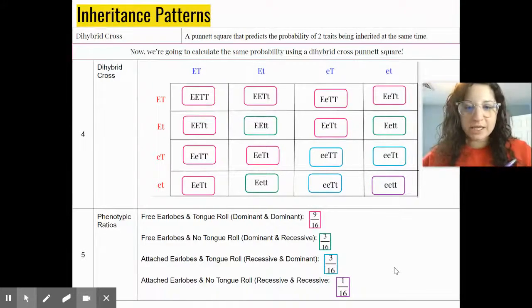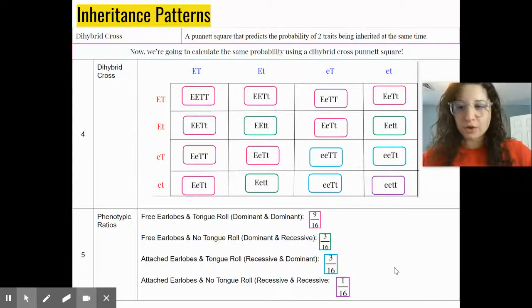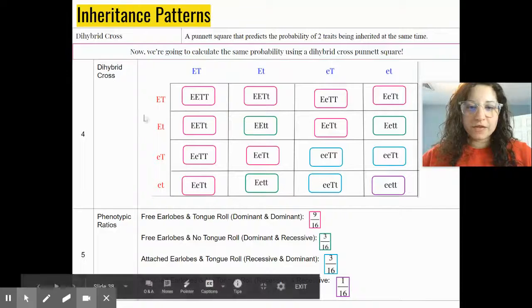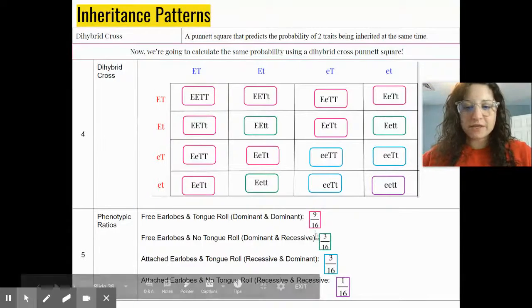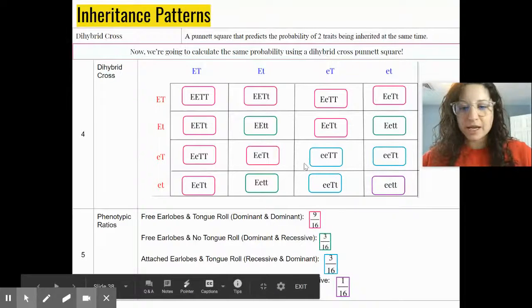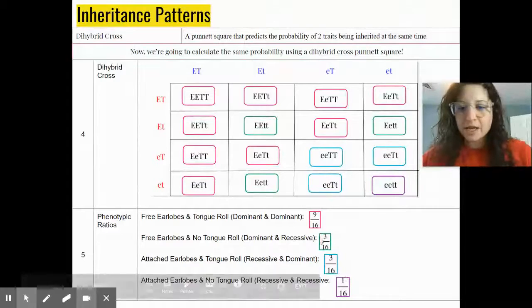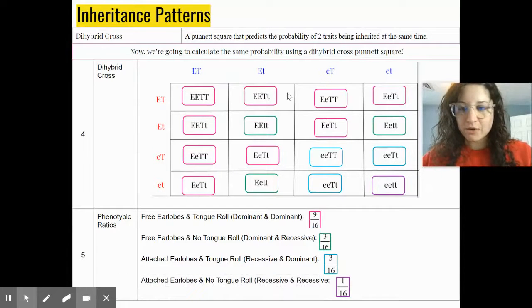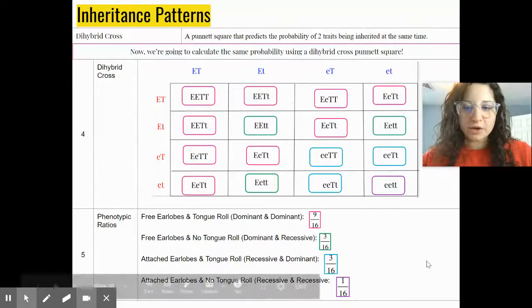You will never be expected to produce your own dihybrid cross from scratch. You'll always be given some structure — maybe it's set up for you and you fill in the middle, or everything is filled in and you count boxes and calculate phenotypic ratios. But you need to understand what the dihybrid cross is showing you and how to read it.